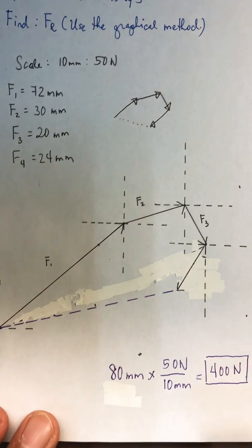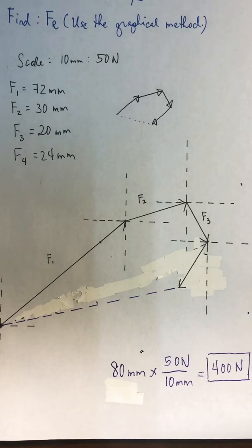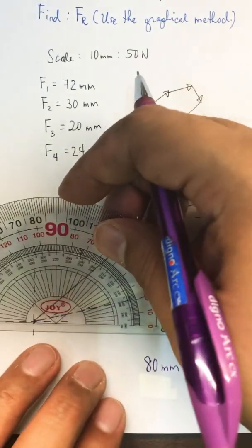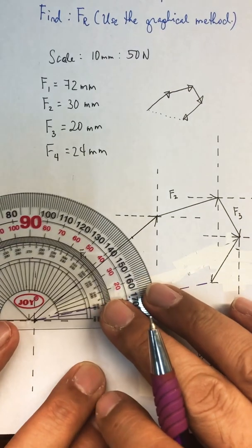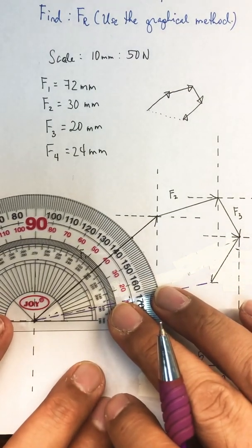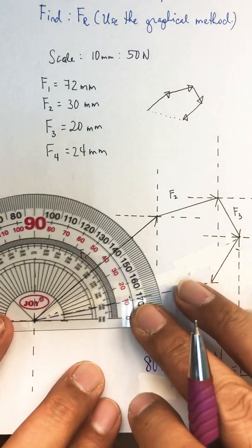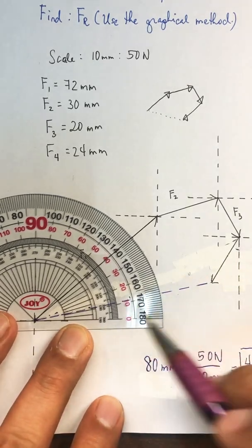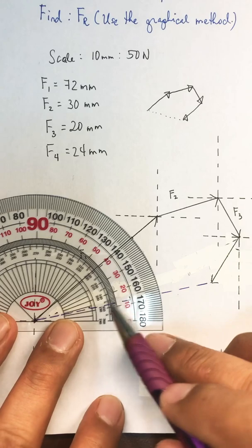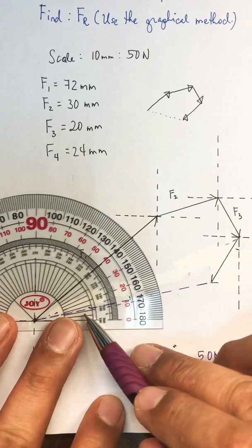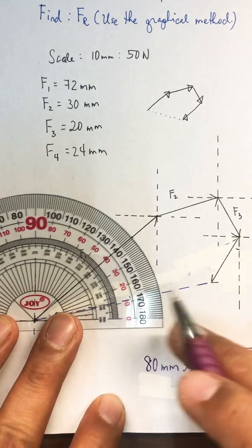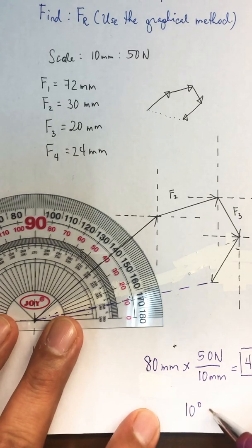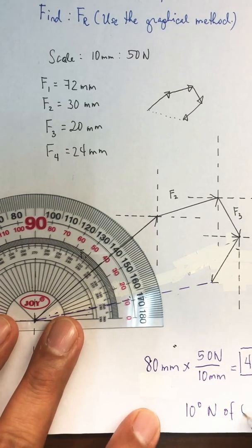To get the angle theta, we put the protractor at the starting point of the very first vector and then measure the angle of the resultant. It is around 10 degrees north of east.